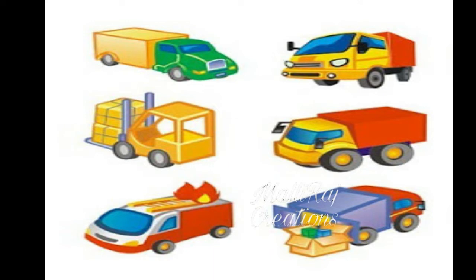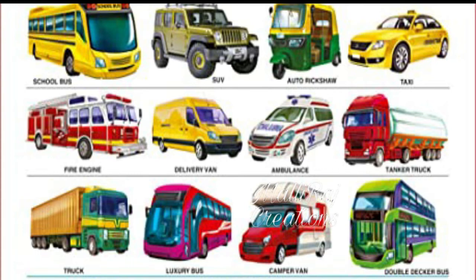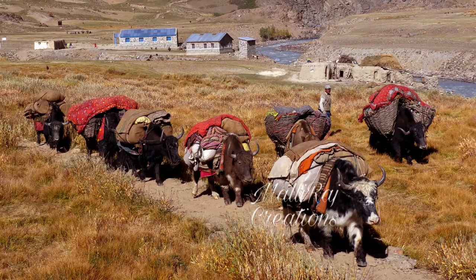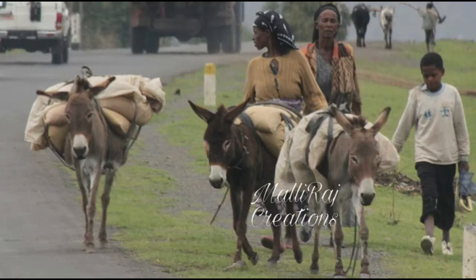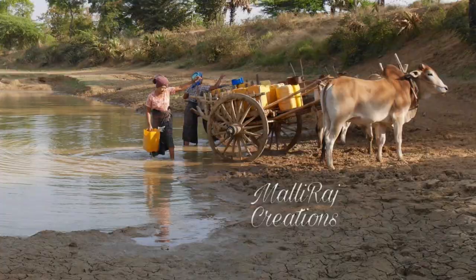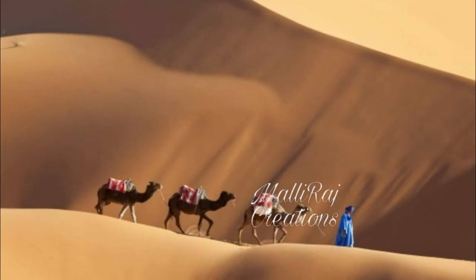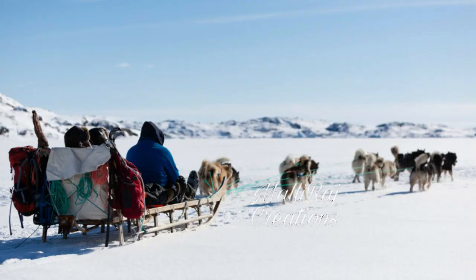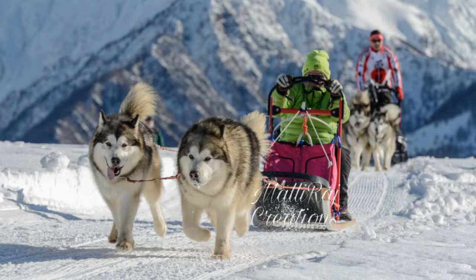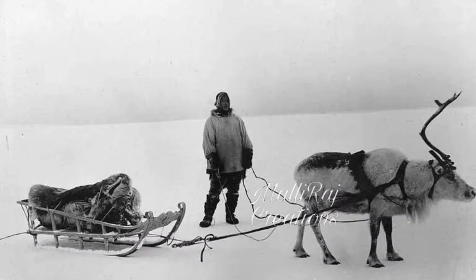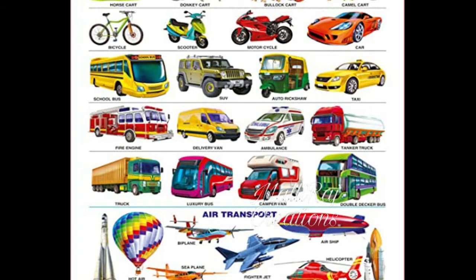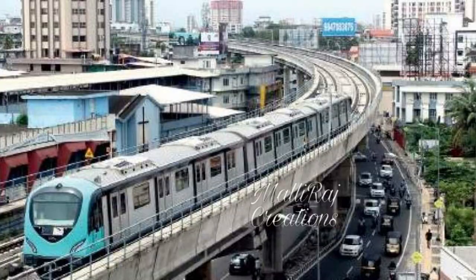Today, all vehicles on the roads have wheels, which help in quick transportation. People use different means of transport to carry loads. In hills, people use yaks. In villages, they use donkeys or bullocks. In deserts, people use camels for travelling or carrying loads. In snow-covered regions, people use sledges pulled by dogs or reindeer.